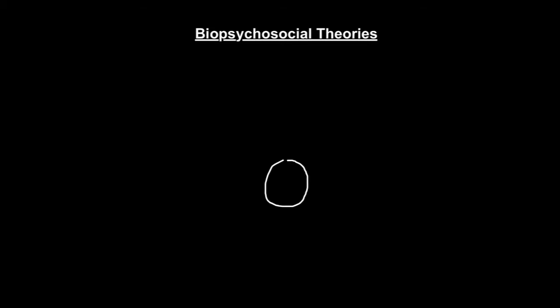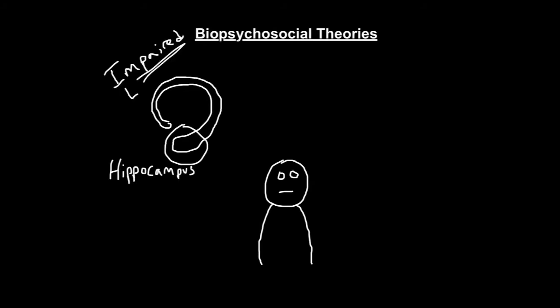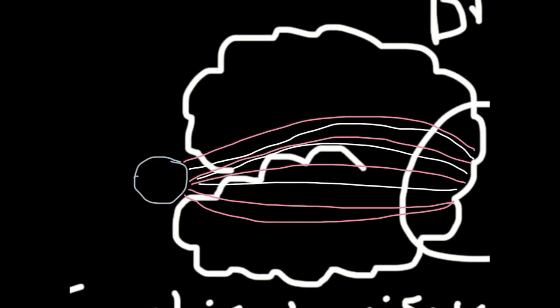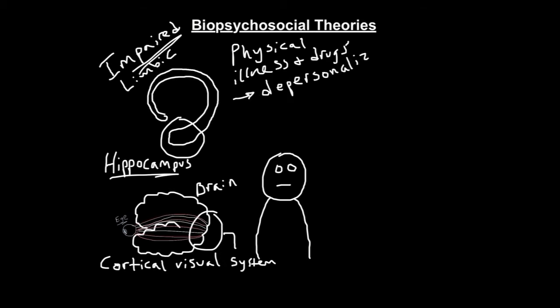Dissociative disorders can be explained using a variety of theoretical frameworks. Biologically, the limbic system may be impaired in individuals who experience traumatic episodes in childhood. Trauma is implicated as an inhibiting factor on one's ability to process information. There is found to be a disturbance in the cortical visual system. Physical illness, such as brain tumors, epilepsy, and migraines, may lead to symptoms indicative of depersonalization disorder.